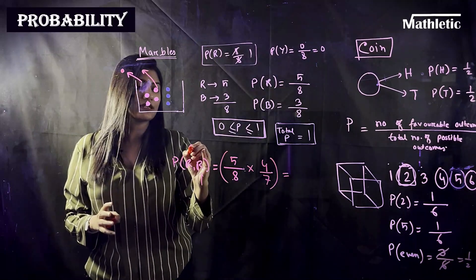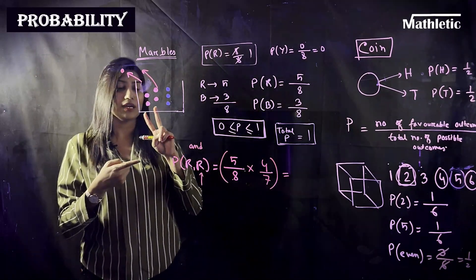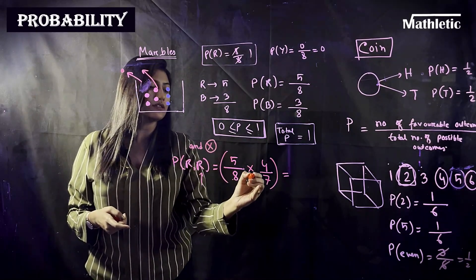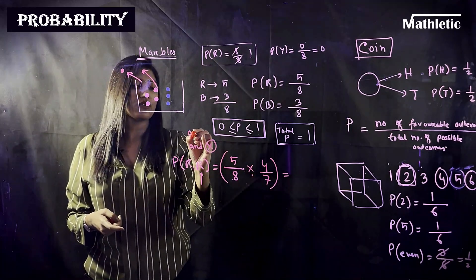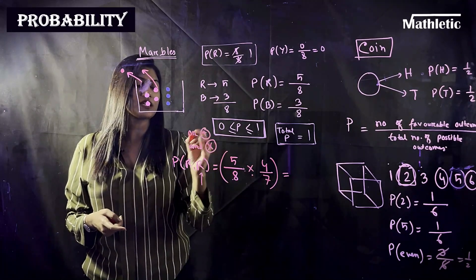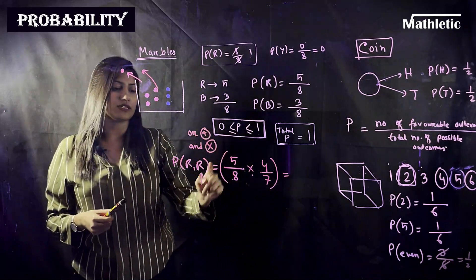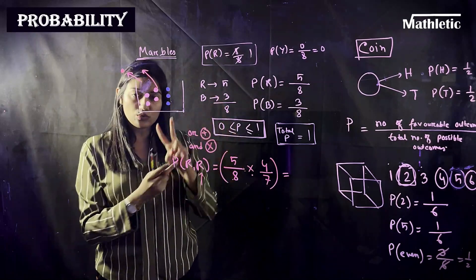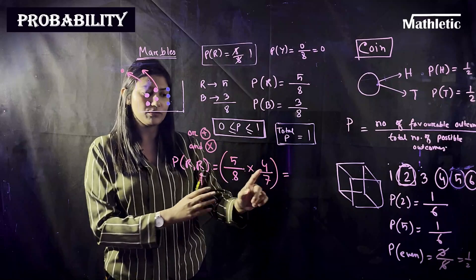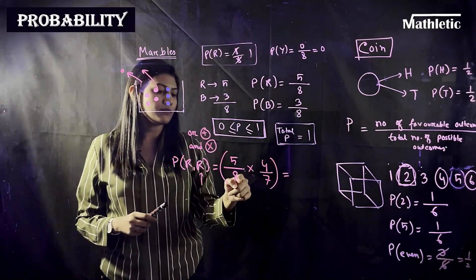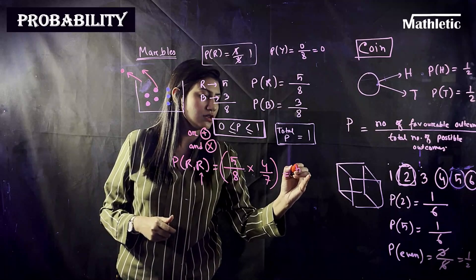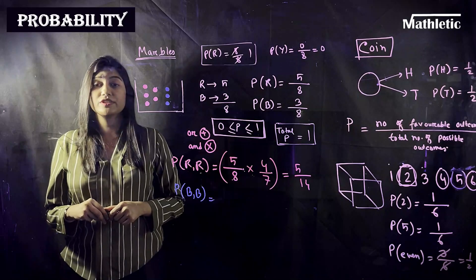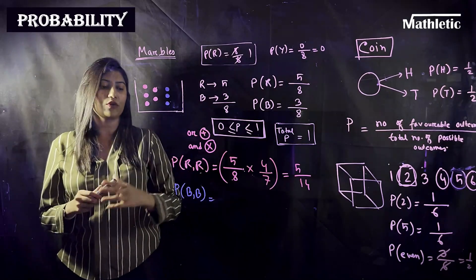Since we need both marbles to be red, this is an AND condition. For an AND condition you always use multiplication. So the probability of both marbles being red is five-eighths multiplied by four-sevenths, which gives five-fourteenths.